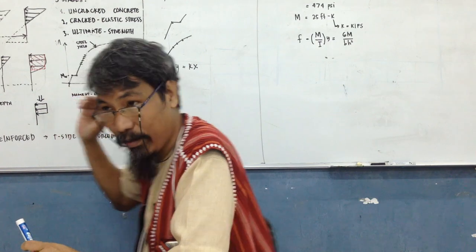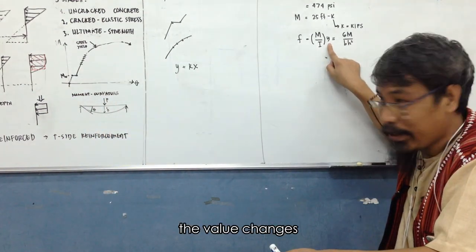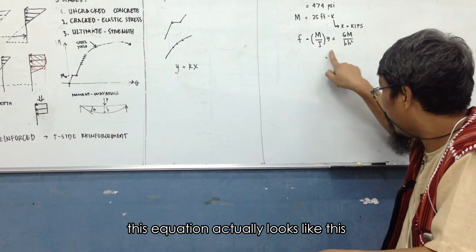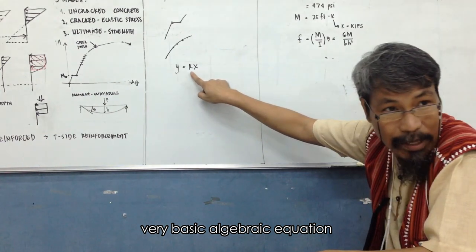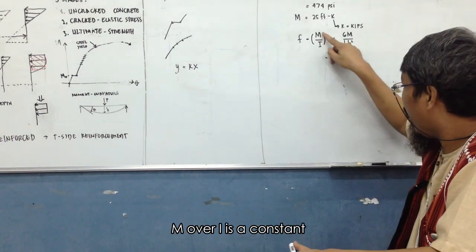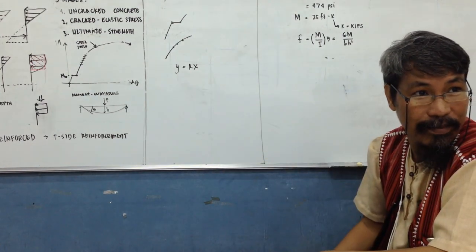Y is variable, so it changes, the value changes. So this equation actually looks like this, very basic algebraic equation. M over I is a constant.